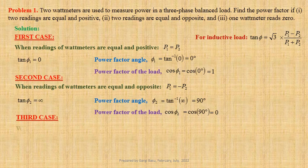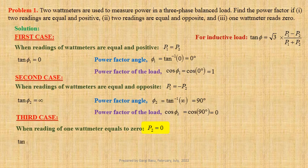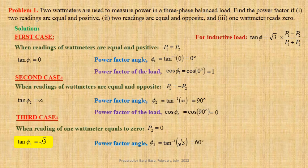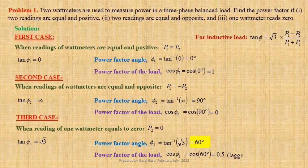Third case: when the reading of one wattmeter equals zero. Let us say P2 equals 0. Therefore, tan φ₃ equals root 3. Power factor angle φ₃ equals tan⁻¹(√3), that is equal to 60 degrees. Power factor of the load, cos φ₃ equals cos(60°), that is equal to 0.5 lagging. For a 0.5 lagging power factor load, reading of wattmeter 2 equals 0. For 0.5 lagging power factor load, reading of wattmeter 1 will be 0.